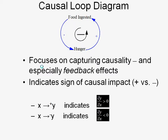Polarity describes how a change in one variable affects a change in another. For example: if you increase the food ingested, will hunger — all other things being equal — become greater or less? If I eat, normally I become less hungry. So it's a minus sign.